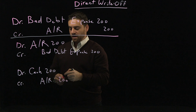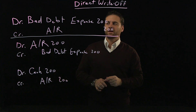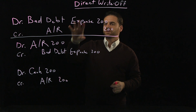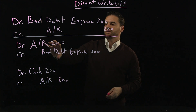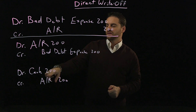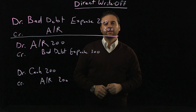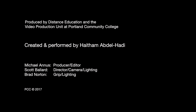The amount doesn't have to be the full amount. Maybe the customer decided to come back and pay just half — just $100. The reversal entry stays the same at $200, but the collection entry becomes $100 debit to cash and $100 credit to accounts receivable. That's it for the direct write-off method.